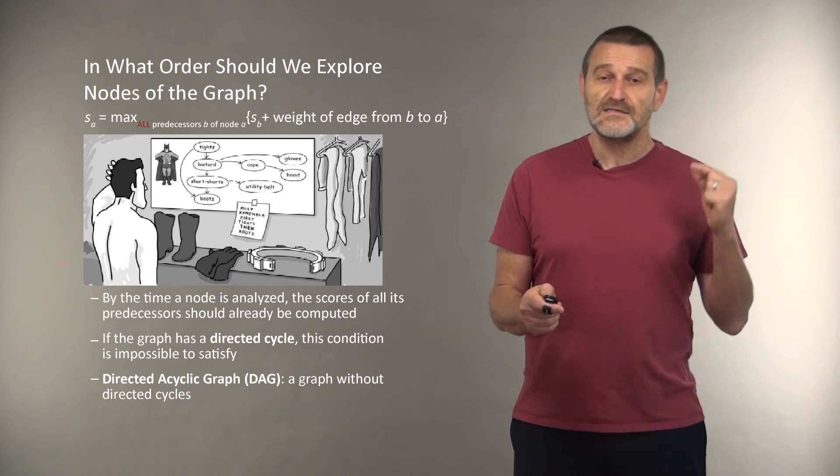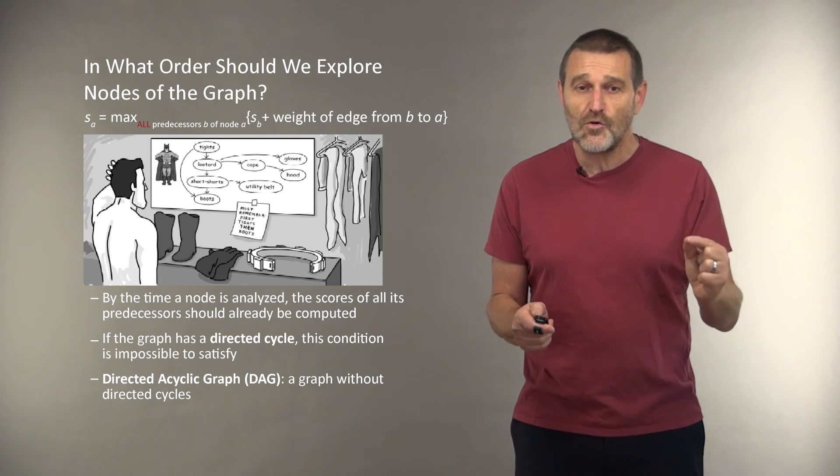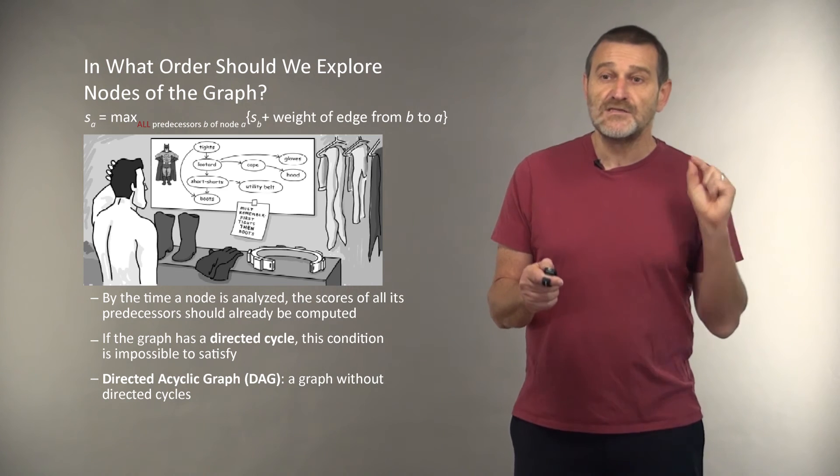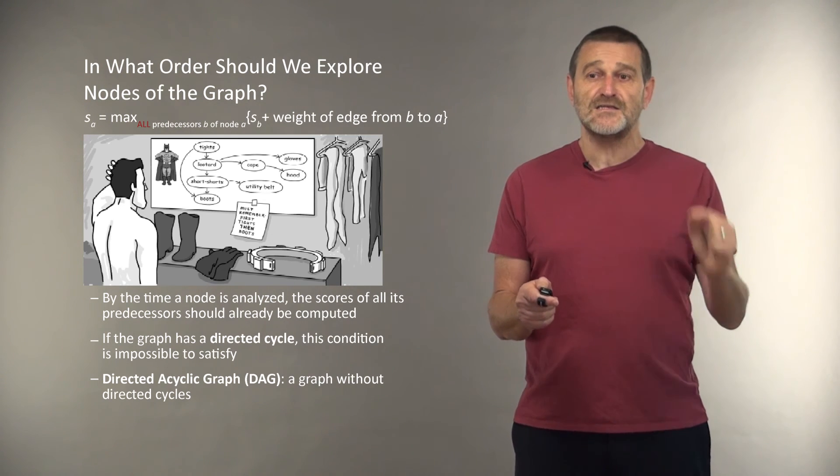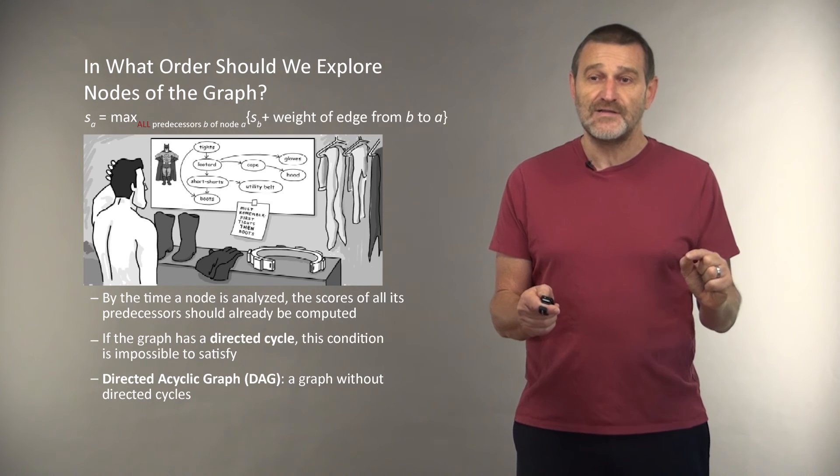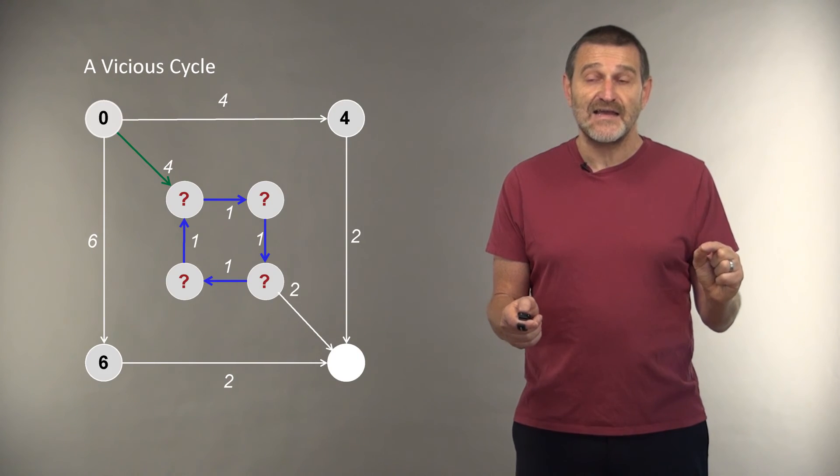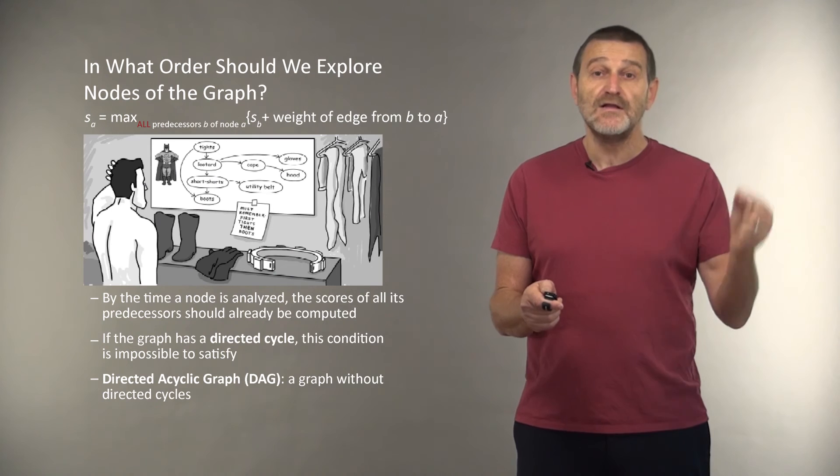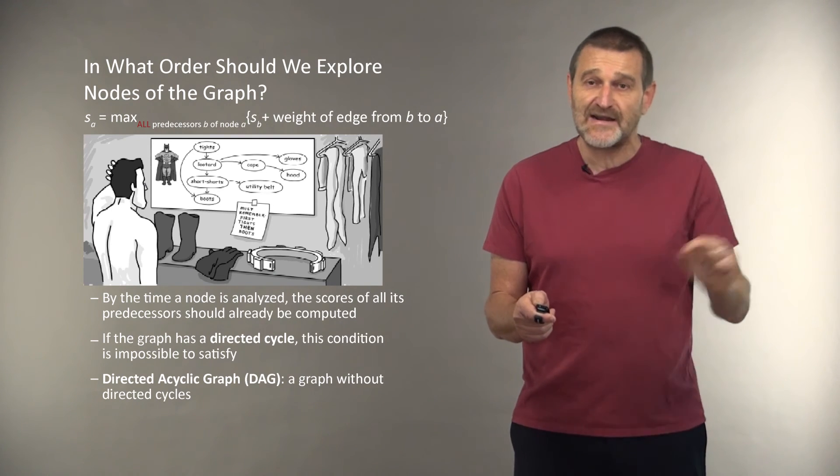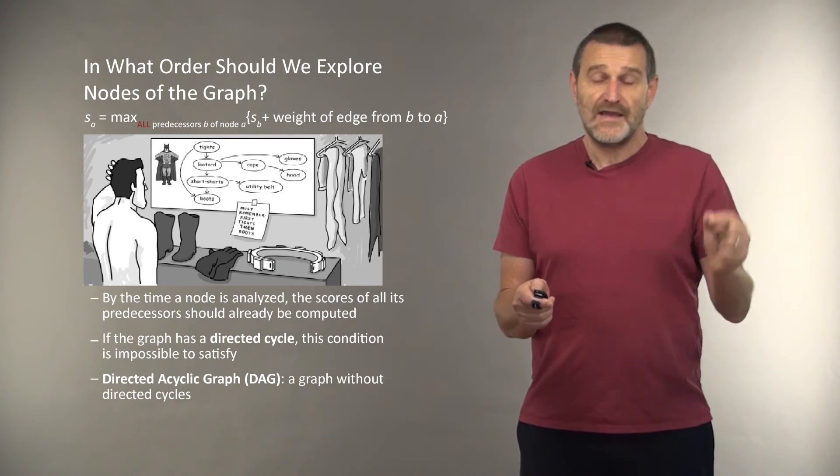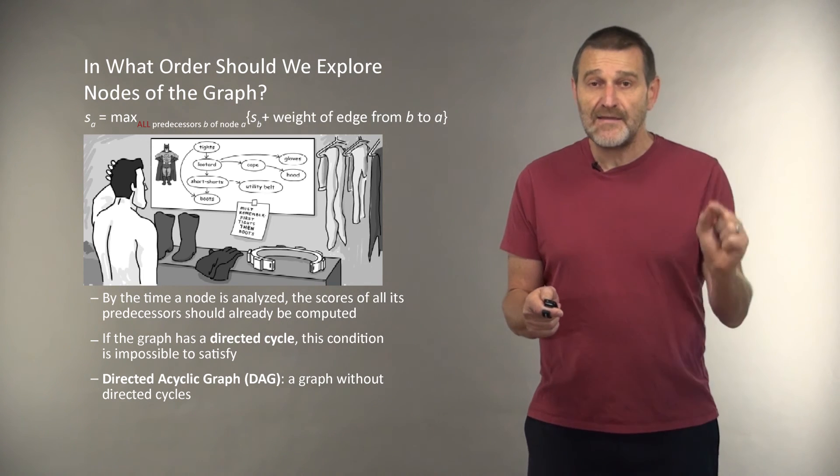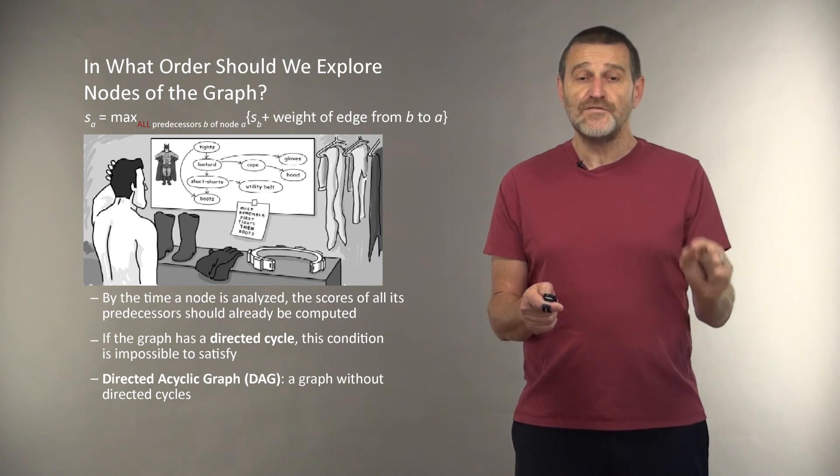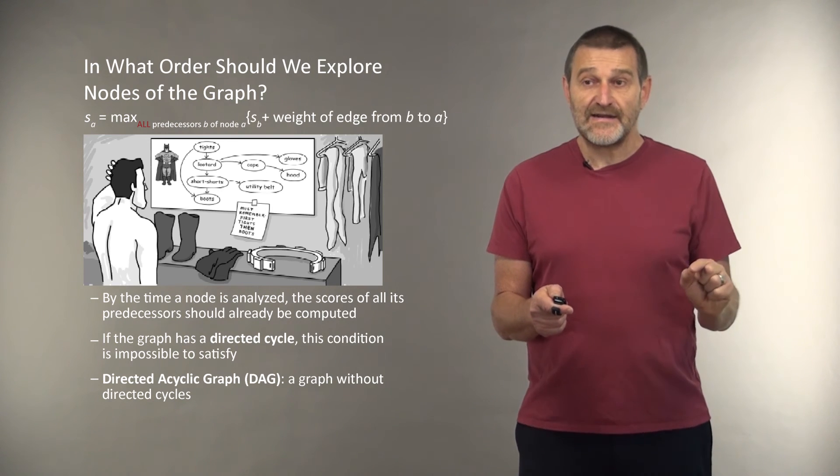So which tells us that the order in which we explore nodes of the graph is extremely important. By the time the node is analyzed, the scores of all its predecessors should already have been computed. And if the graph has a directed cycle, like the graph we just looked at, there is simply no way to solve the problem. Because a traveler may travel along this directed cycle as long as he wants to. Therefore, we limit attention to so-called directed acyclic graphs, or DAGs, which are graphs without directed cycles.